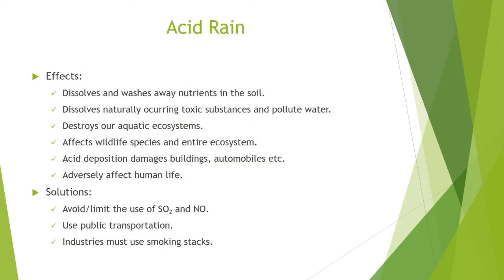Now let's see the effects of acid rain. It dissolves and washes away nutrients in the soil. It dissolves naturally occurring toxic substances and pollutes water. It destroys aquatic ecosystems by making water acidic, affecting plants and animal life. It affects wildlife species and entire ecosystems. Acid deposition damages buildings, automobiles and other structures made of stone and metal, causing extensive damage and ruining historic buildings. It also adversely affects human life by creating health issues.